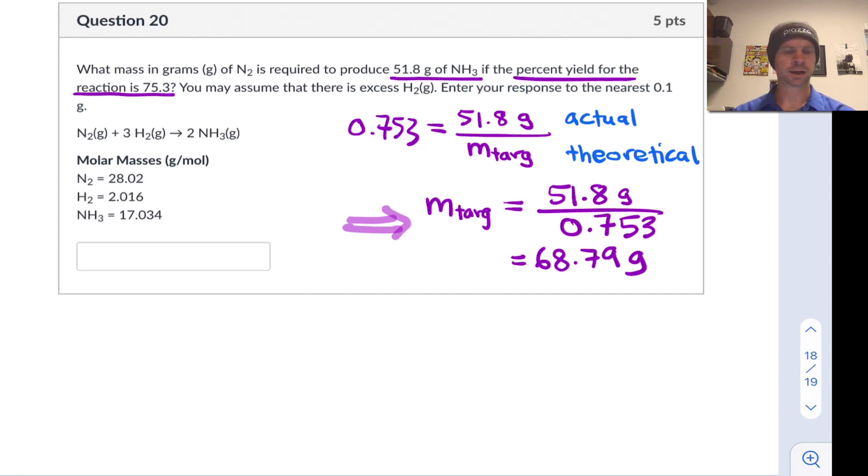So now at this point it becomes a mass to mass stoichiometry problem where we have a target mass of NH3, 68.79 grams. And we need to work sort of backwards to the mass of reactant N2 required to produce the 68.79 grams of NH3. So it's mass to mass stoichiometry.